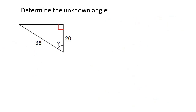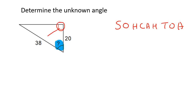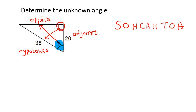Here's the next example. Always start by writing down SOH-CAH-TOA. They're asking for this angle, so highlight it, then label your triangle. The side opposite the 90° is always the hypotenuse. The side opposite the angle you're looking for is the opposite, and the other side is the adjacent. You have the 38, which is the hypotenuse, and the 20, which is the adjacent. Looking at sin, cos, and tan, cos has all the information we need.